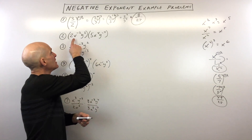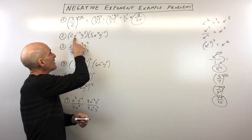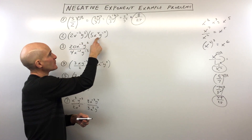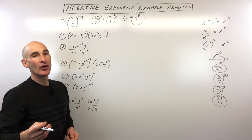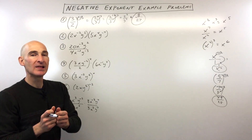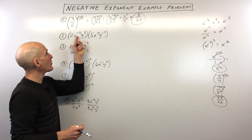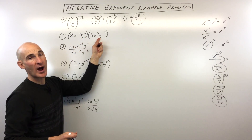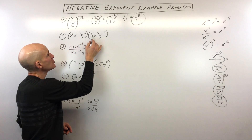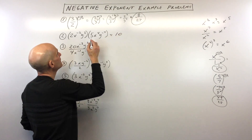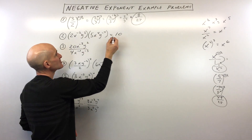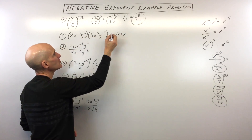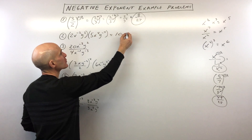Getting a little bit more challenging. So we've got 2x to the negative 2, y cubed, that whole quantity times 5x to the fourth, y to the negative 7. What you want to do is multiply like terms — the numbers together, the x terms together, and the y terms together. So 2 times 5 gives us 10. x to the negative 2 times x to the fourth: when you multiply with the same base, you add those exponents. So negative 2 plus 4 is positive 2.